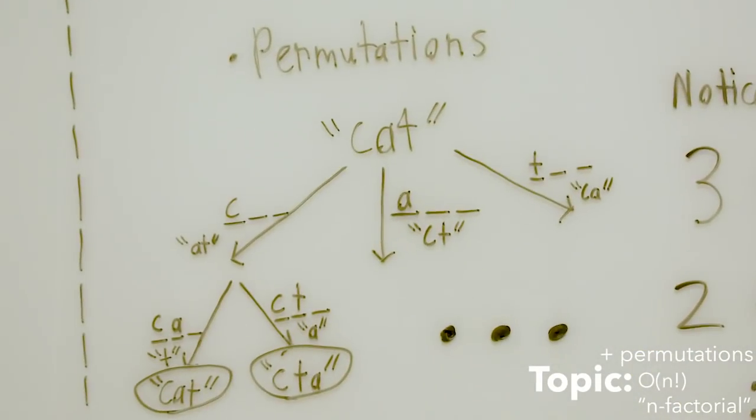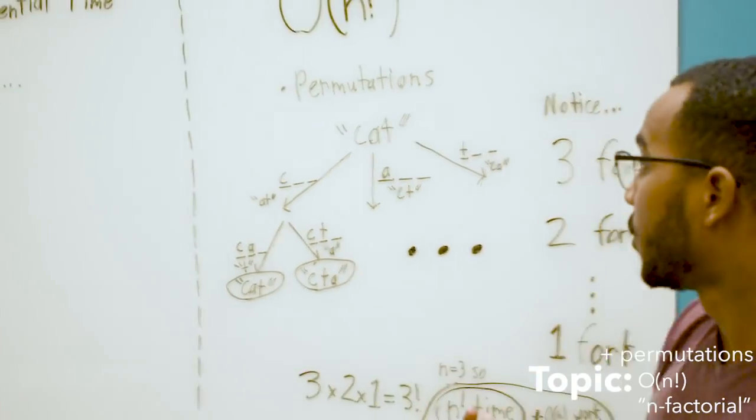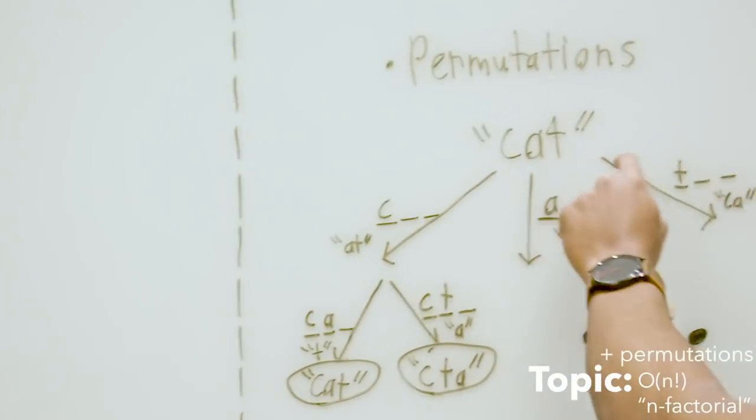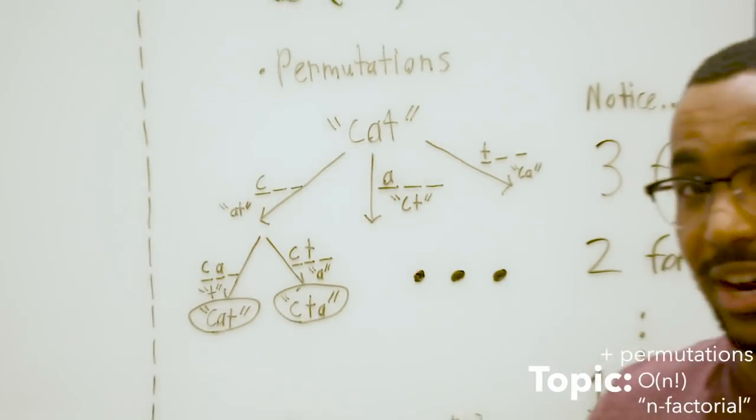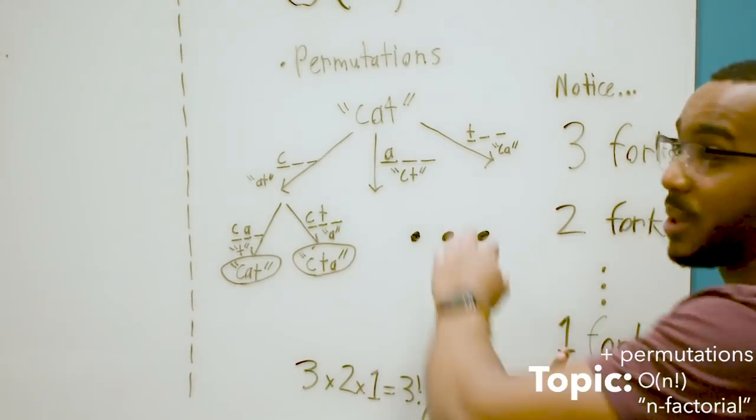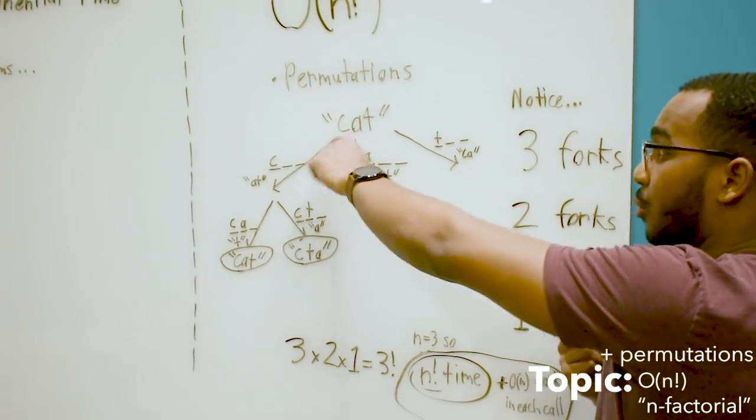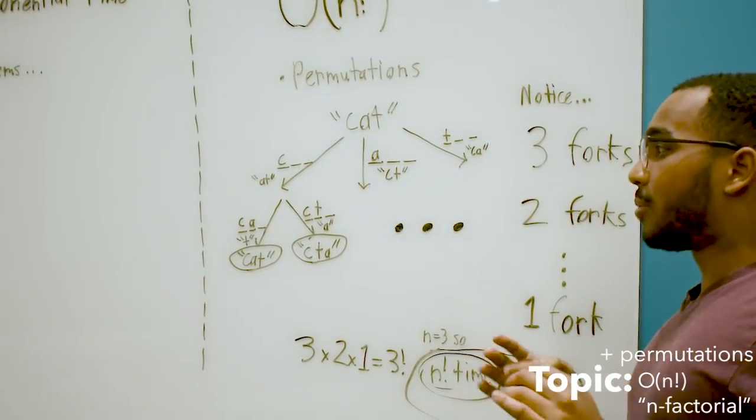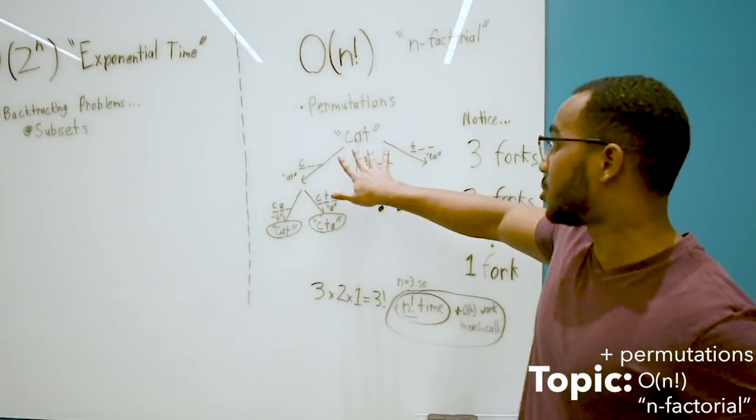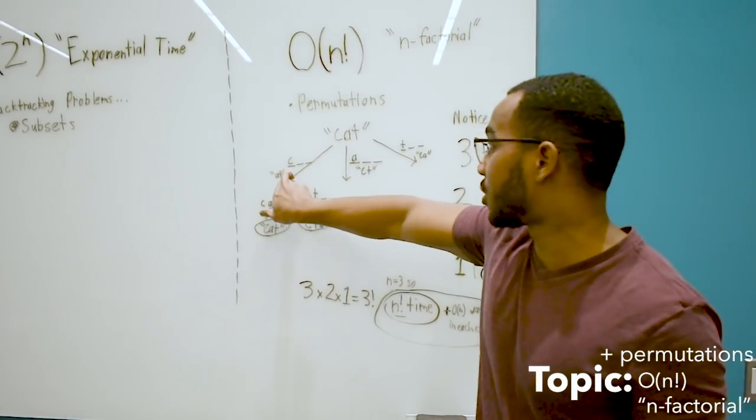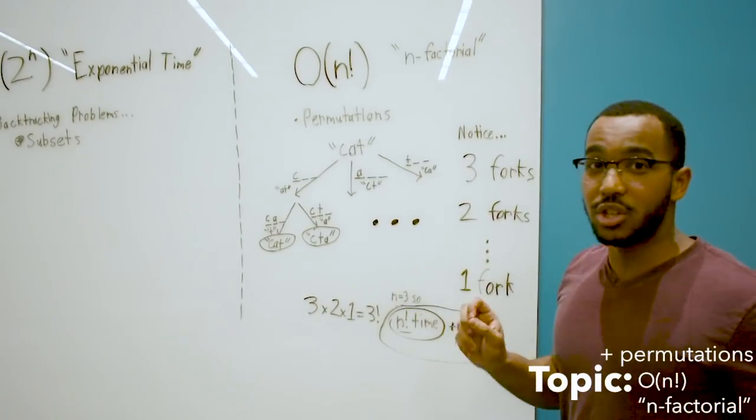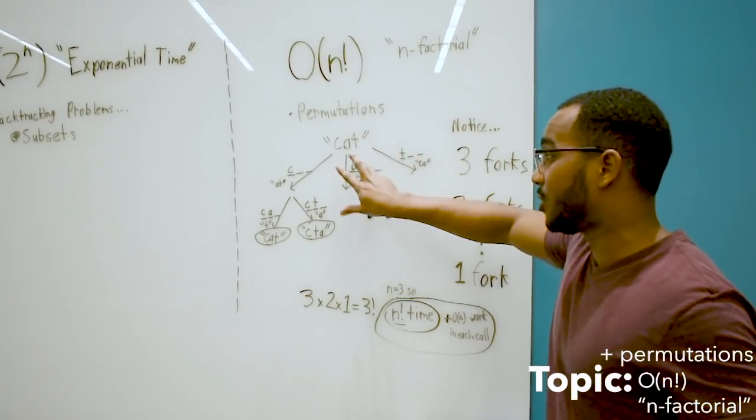We have three elements to place. Once we place the first letter of each, we have two leftover elements. Now we need to place two elements in, we fork three times. Do you see how there's three forks here? Do you see how there's two forks here?